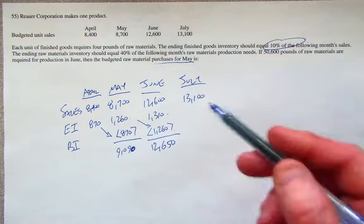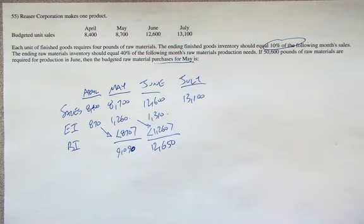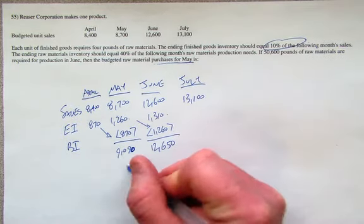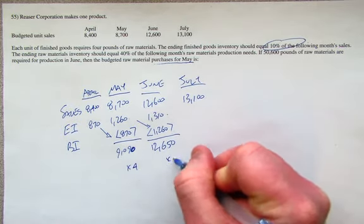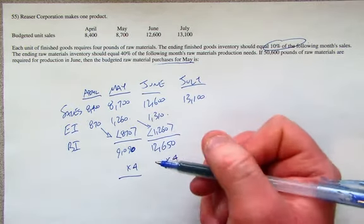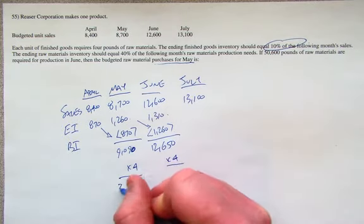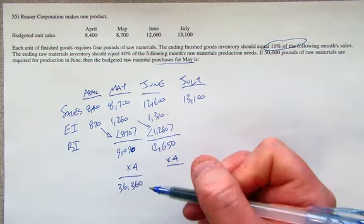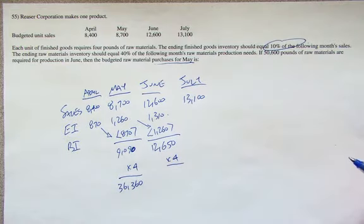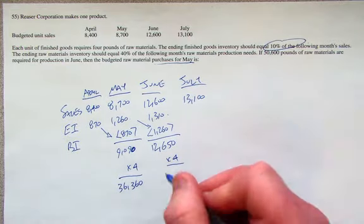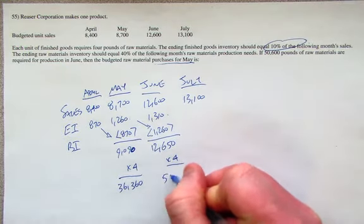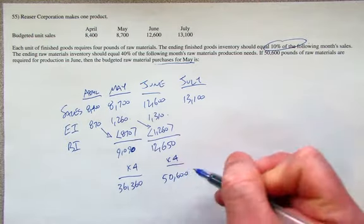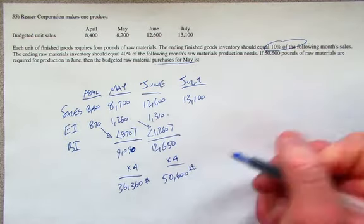Now they're asking us, what's the purchases requirement for May? Well, if each one of these items requires 4 pounds of raw material, then we know that simply to meet the production requirements, for May we're going to need a little over 36,000 pounds of raw material. And for June, we're going to need 50,600 pounds of raw material.